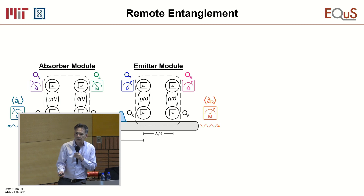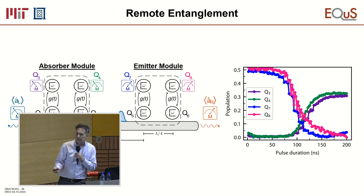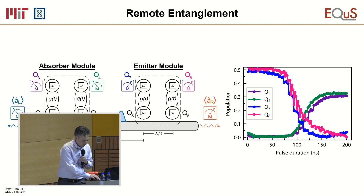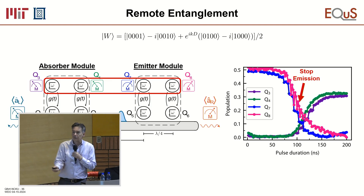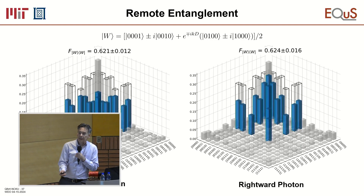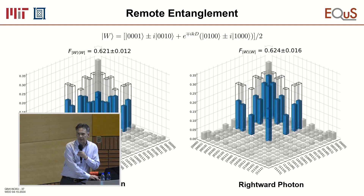The last thing to show is remote entanglement of qubits three and four with qubits seven and eight — distributed entanglement as a resource. We emit from the emitter module, qubit populations go to zero, and simultaneously increase on the absorber. We can stop it halfway — emitting half a photon — so all four qubits become entangled in a W state, where the excitation is distributed coherently with a phase factor related to the distance between emitter and absorber. The fidelity is around 62% for both leftward and rightward photons, indicating it's working as expected.